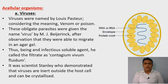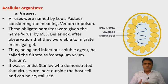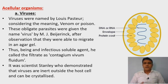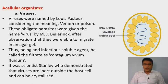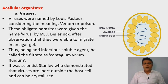The next topic is acellular organisms. Acellular organisms are those which show absence of different types of cell organelles like mitochondria, Golgi complex, and endoplasmic reticulum, and they do not have a definite cell structure. Hence they are called acellular organisms. There are three types of acellular organisms which we are going to study. The first type of acellular organisms we will learn about is viruses.